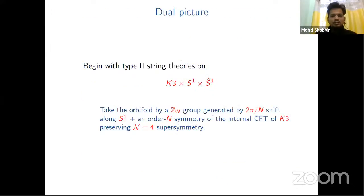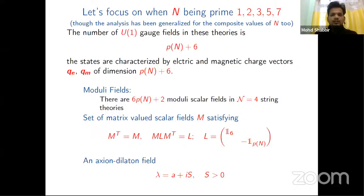There's a dual picture here. Begin with type II string theories on K3 × S^1 × S^1, take the orbifold by Z_N group generated by 2π/N shift along S^1 and also an order N symmetry of the K3 CFT preserving its central charge. Let's focus on when N is a prime number: 1, 2, 3, 5, 7. Though the result has been also generalized for N being composite. The number of Abelian gauge fields in these theories is 6N + 6.